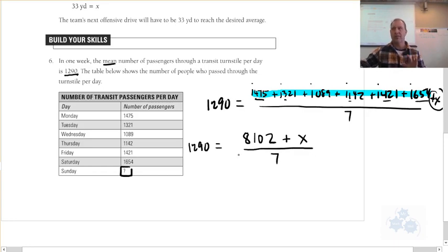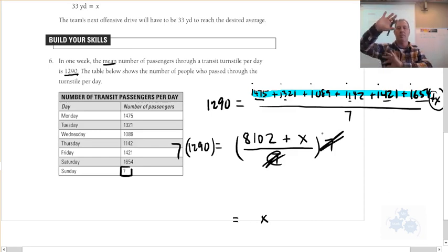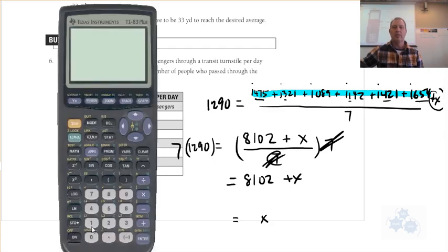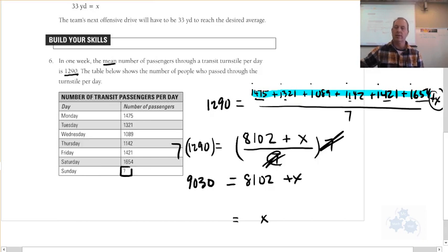So this is set up exactly the way we just did our previous example. So how do I get rid of this seven now? Because I want to get x all by itself. This is what I want to end up with, right? How do I get rid of the seven? Times each side by seven. Times each side by seven. I love it. That's perfect. So multiply this by seven, and I'm going to multiply this by seven. So these sevens are going to divide out. They're going to be gone. One on top, one on the bottom. That makes a one, and it's gone. So I'm going to be left with 8,102 plus x over here. And then 1,290 times 7 is 9,030. Awesome.